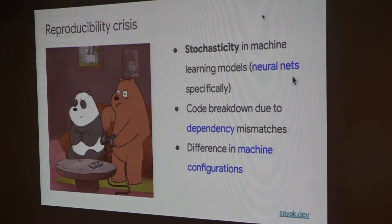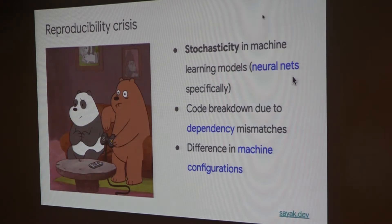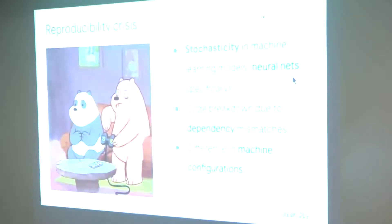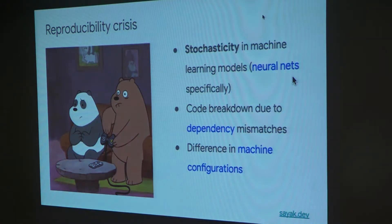Different machine configurations can also cause issues. For example, if I am running all my models on a machine that has Titan GPUs and a teammate is running the same training scripts on different GPUs, that discrepancy can affect the project significantly. It is important to maintain a consistent machine configuration across your project team.